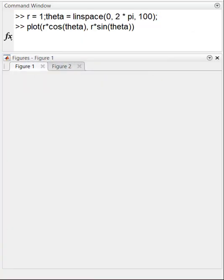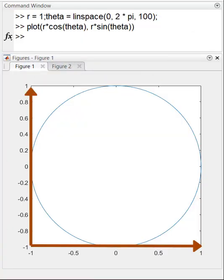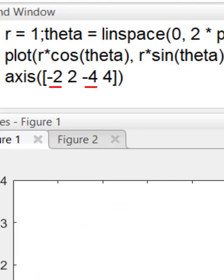Take control of the axis. I plot this graph. I want to modify axis limits. I type axis, open parentheses, open brackets. I set the x limits to -2 and 2, and y limits to -4 and 4. Then turn on the grid.